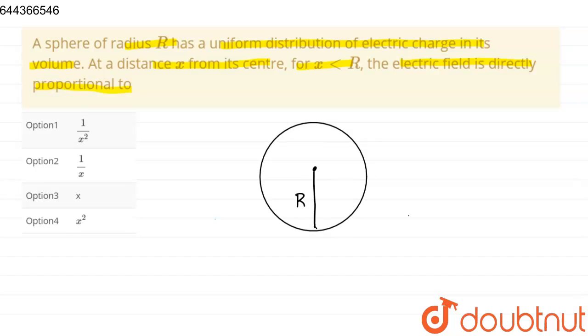Now, at a distance x smaller than the radius, suppose this is point A at distance x less than R. You have to find the electric field.